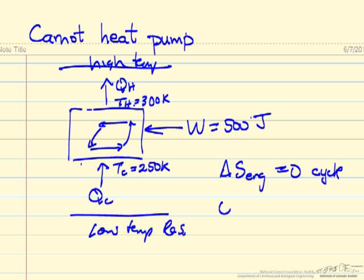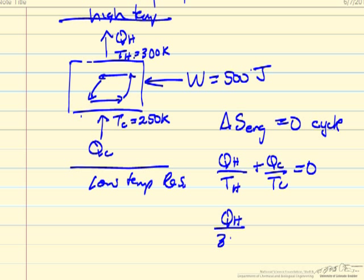So that means QH over TH plus QC over TC must equal zero for this system. And so QH over 300 plus QC over 250 is equal to zero.